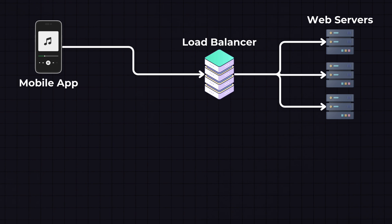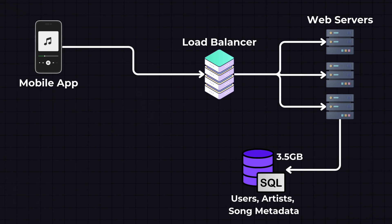Web servers are the APIs that handle incoming requests from the mobile app. For instance, if a user wants to play a song, the request is sent to these web servers. The server then determines where the song is located — in a database or storage service — and how to retrieve it. This is where we store our metadata about users and songs: an SQL database holding user info like usernames and passwords, and song metadata like song names, artist names, and album details.